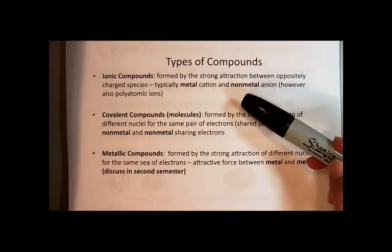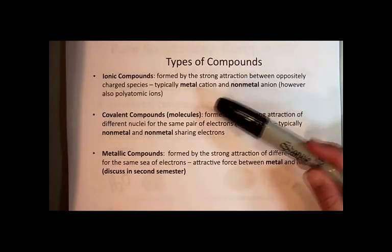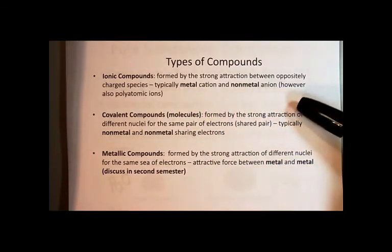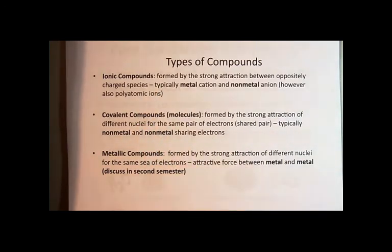Ionic compounds are formed by the strong attraction between oppositely charged species—typically a metal cation and a non-metal anion. There's also some polyatomic ions you'll have to recognize.